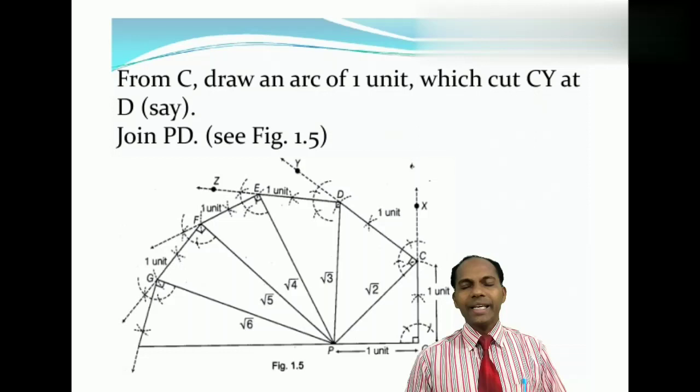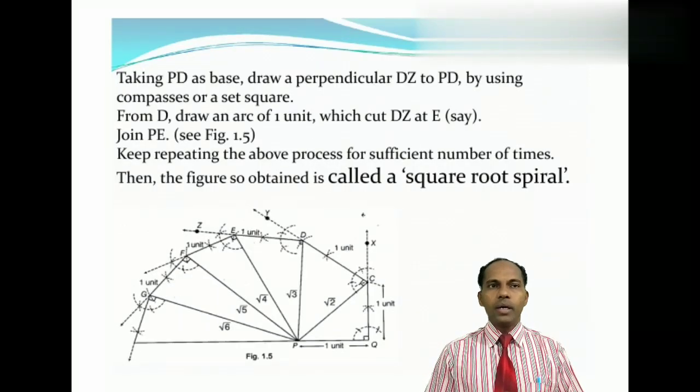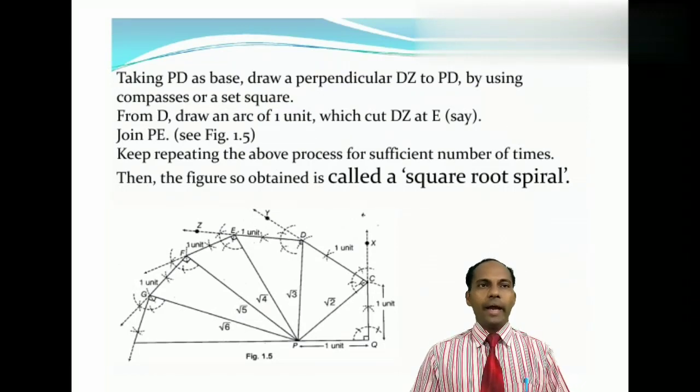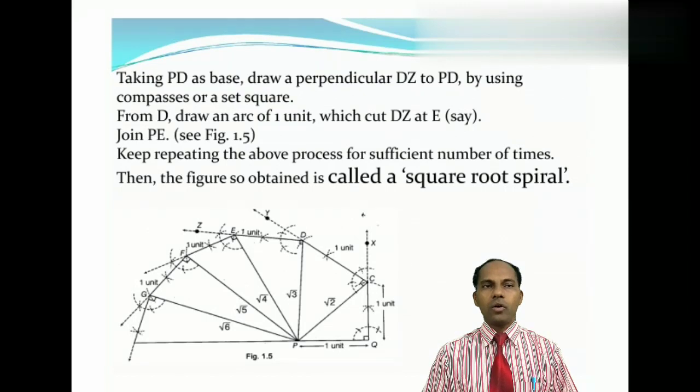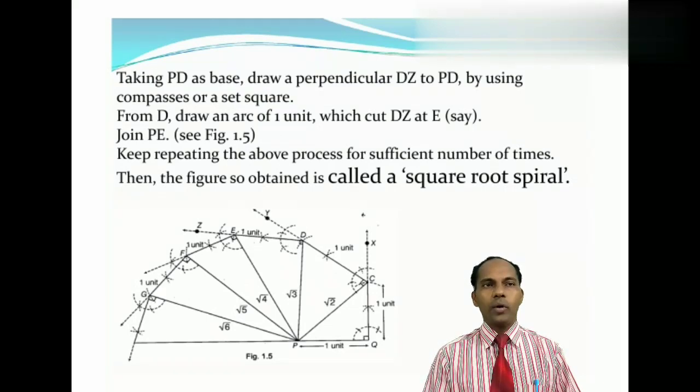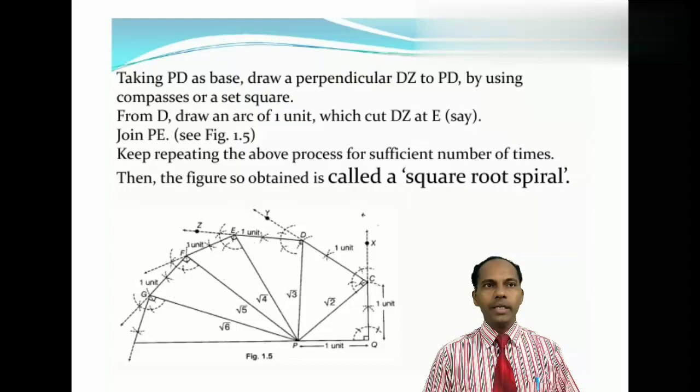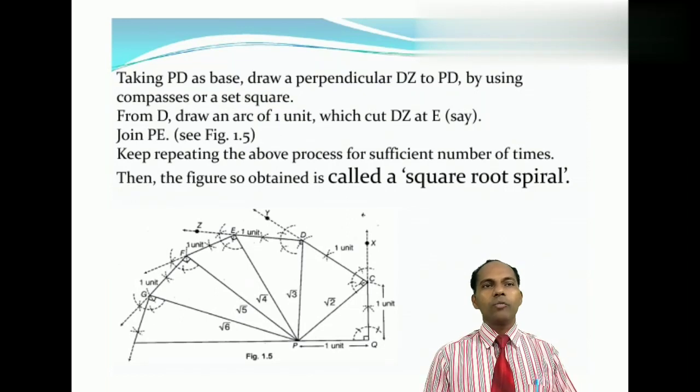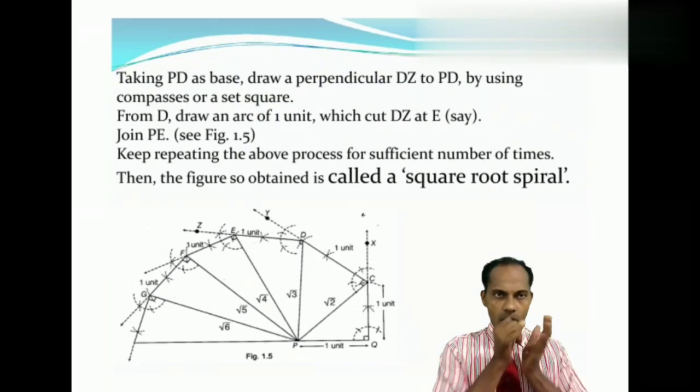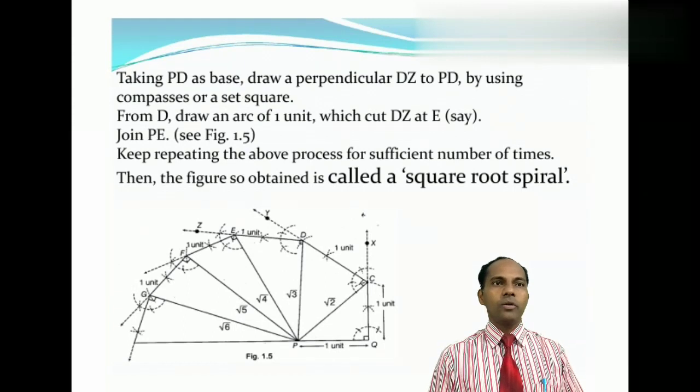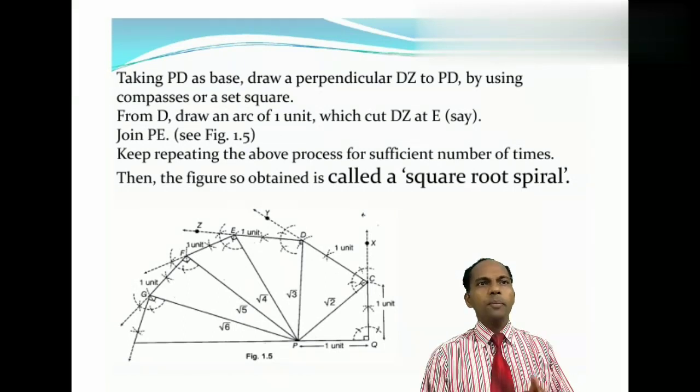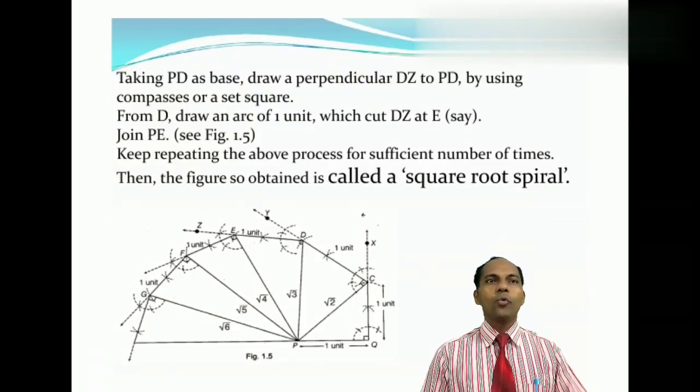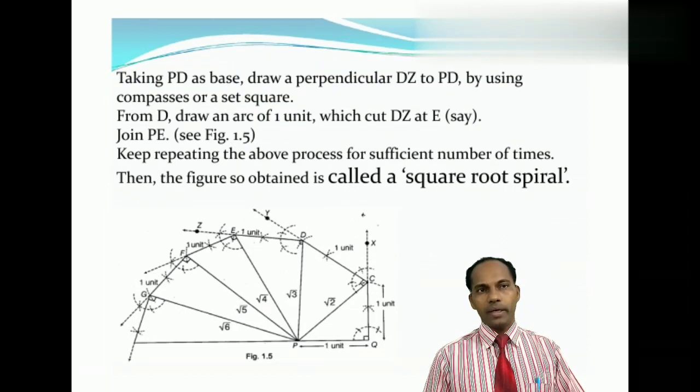And taking PD as the base, we will draw the perpendicular at point D, and from that perpendicular, we will cut 1 unit. So at point E, DE will be equal to 1 unit and you will join P, E. So that PE will be equal to root 4, which is equal to 2. Keep repeating the above process for sufficient number of times so that we will get a square root spiral.